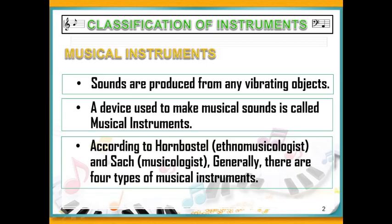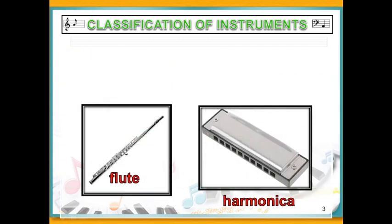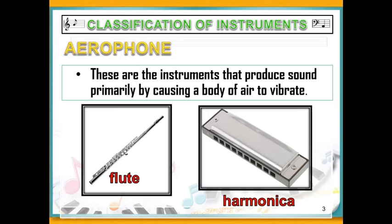Since we have a lot of musical instruments, Hornbostel and Sachs classify musical instruments into four. The first classification is Aerophone. As you can see on the picture, we have flute and harmonica. Aerophones are instruments that produce sound primarily by causing a body of air to vibrate — you need to blow air into the instrument for you to hear the sounds.